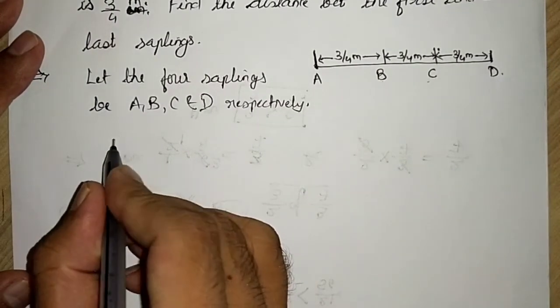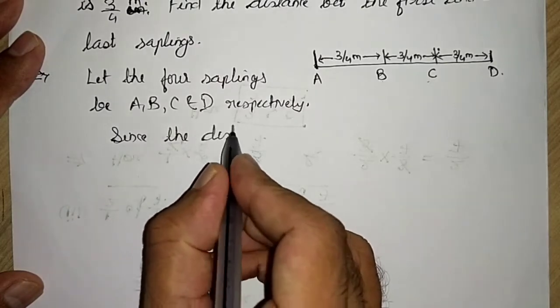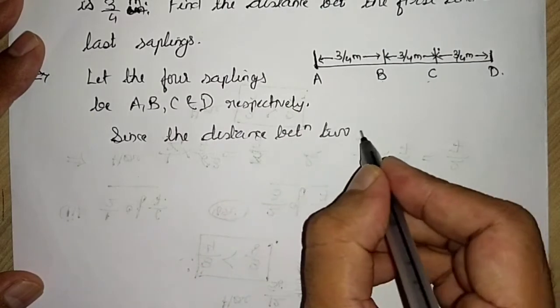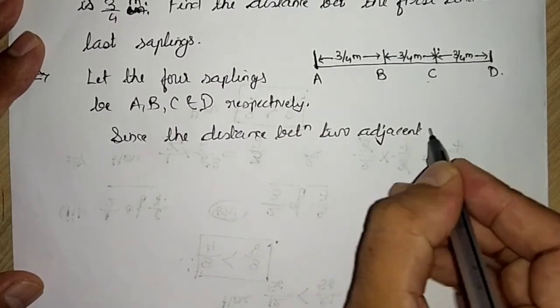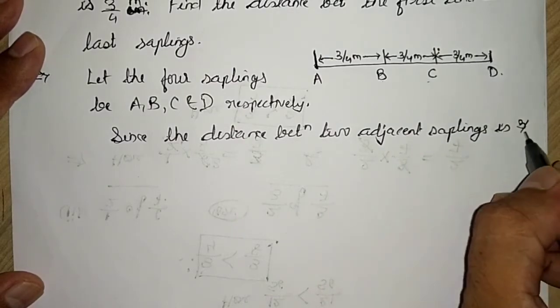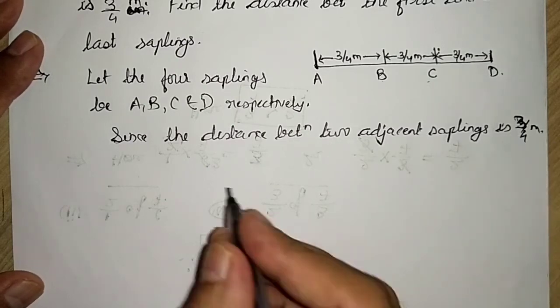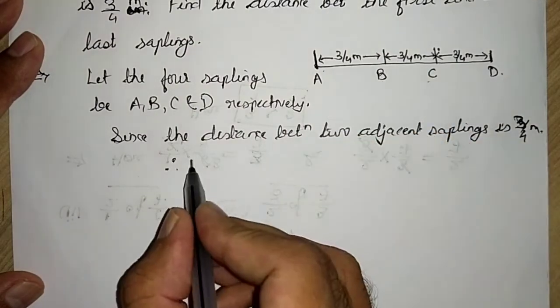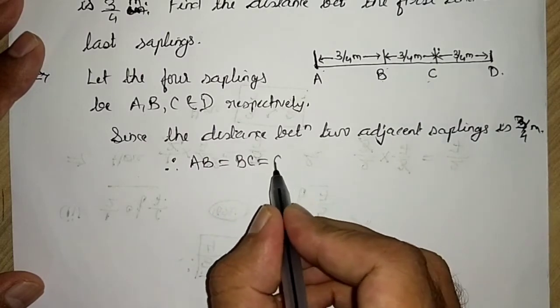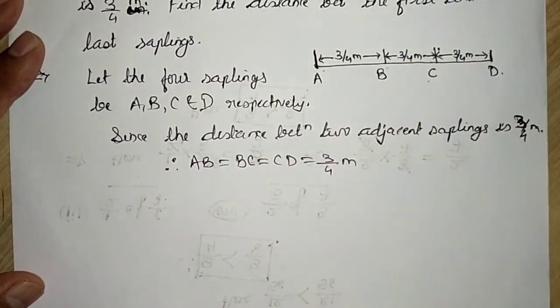Now, since the distance between two adjacent saplings is 3 by 4 meter, they have given us 3 by 4 meter. Therefore, can we say AB is equal to BC is equal to CD is equal to 3 by 4 meter. Because each distance is having 3 by 4 meter.